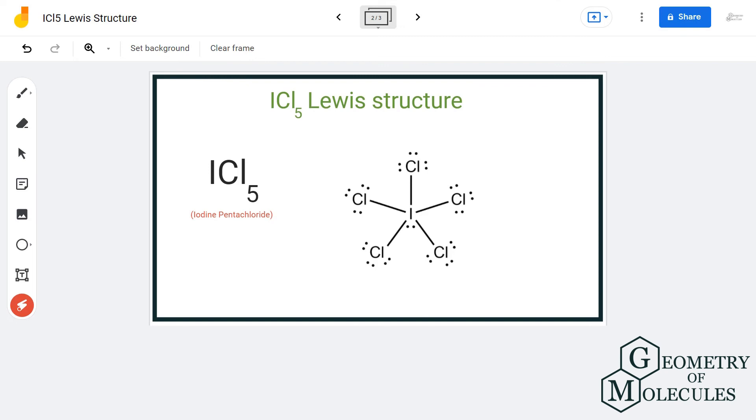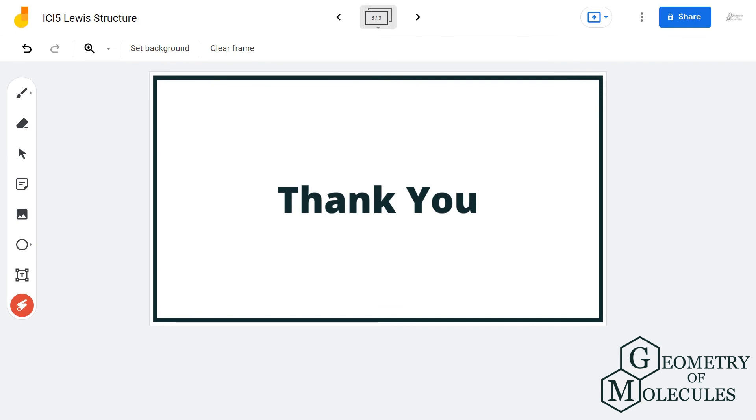This is the Lewis structure for ICl5, in which the iodine atom forms five single bonds with five chlorine atoms. For more videos on Lewis structure, molecular geometry, and polarity of molecules, make sure to subscribe to our channel. Thanks for watching!